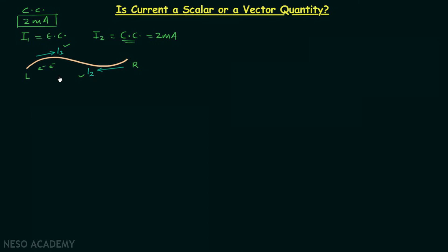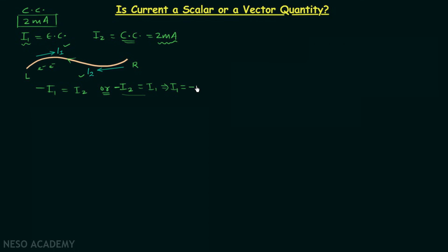I1 and I2 are flowing in opposite directions. So if we place a negative sign in front of current I1 then it will be equal to current I2, because placing a negative sign reverses its direction, making it flow from right to left, which is the same direction as I2. Similarly, I2 with a negative sign will be equal to I1. We have I2 equal to 2 milliampere, so I1 is equal to minus 2 milliampere.